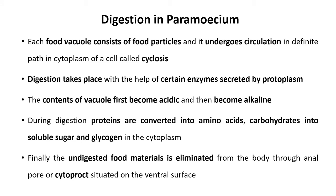In digestion in Paramecium, each food vacuole consists of food particles and it undergoes circulation in a definite path in the cytoplasm of the cell, called cyclosis. Whenever food enters the cytoplasm, it revolves around the periphery of the cytoplasm in the cell of Paramecium — this is called cyclosis. Digestion takes place with the help of certain enzymes secreted in the protoplasm, which digest complex food into simple food. The contents of the vacuole first become acidic and then alkaline; due to the action of acid, the food is digested in the cytoplasm.